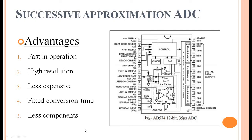We are going through each ADC type one by one. We have already covered flash ADC, which is faster in operation than successive approximation. However, flash ADC requires more components for higher resolution, making it complex and expensive to manufacture. Successive approximation ADC uses fewer components, is less expensive, has fixed conversion time, and offers high resolution and accuracy. Thank you.